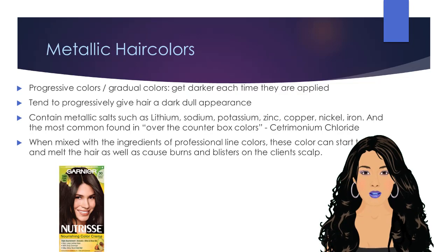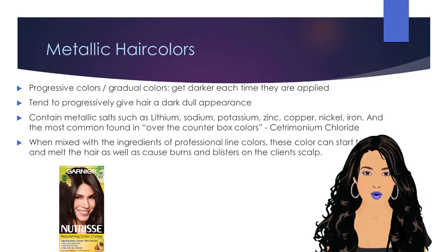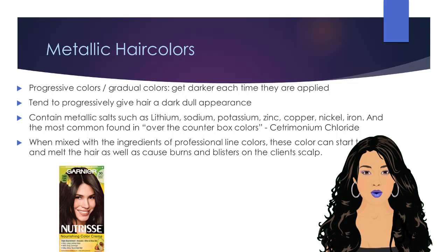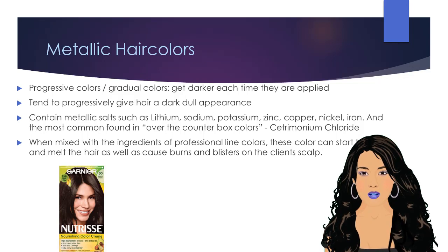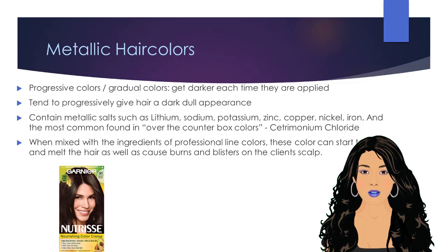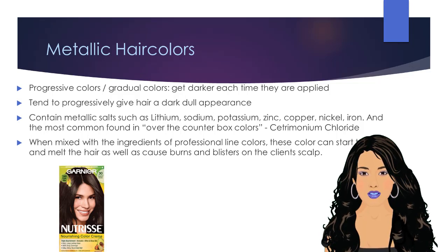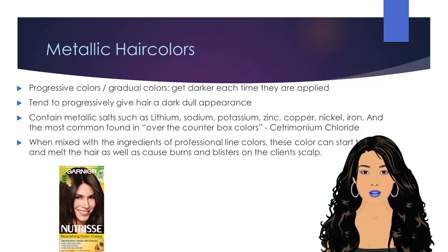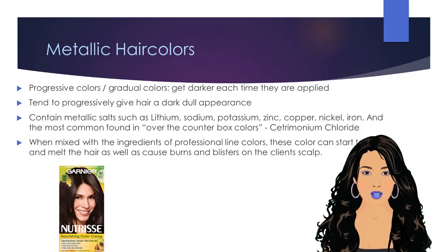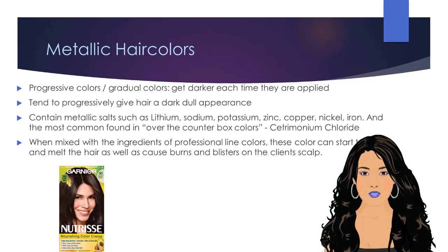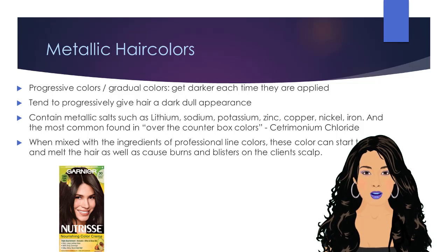Metallic hair colors are another form of permanent hair colors. These colors are also known as progressive colors and gradual colors. The user of these types of hair color should be aware that they are known as gradual hair colors because the hair color will gradually get darker each time these colors are applied. These hair colors tend to progressively give the hair a dark, dull appearance, as opposed to the sheen or shine that most clients desire. These are the types of hair colors that professionals commonly refer to as boxed dyes, and are typically found over the counter or on drugstore shelves.